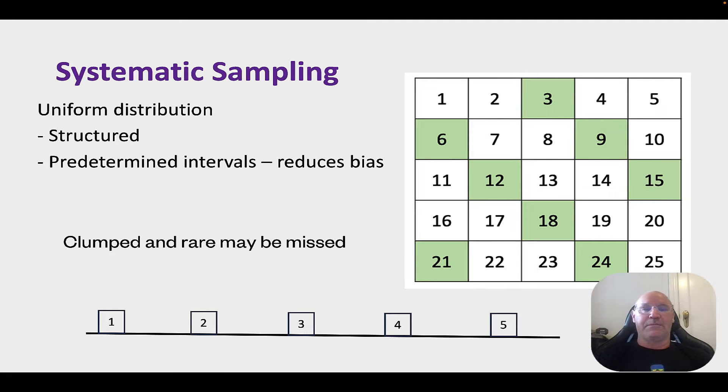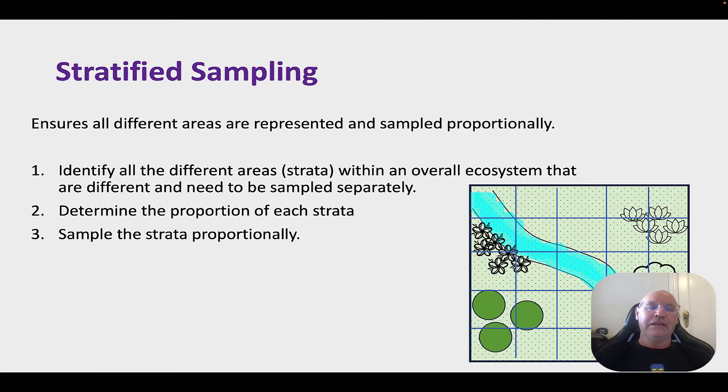So here's an example of how we might do systematic sampling. So every... again, it's predetermined. Every three quadrats, in every third quadrat, we're going to do. Okay? Predetermined ahead of time. Removes the bias.